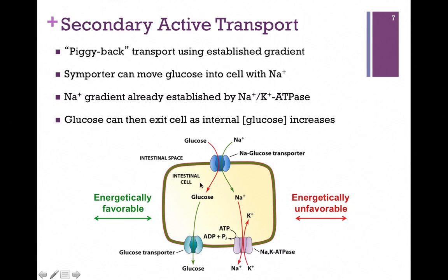Notice that this is a good example of a symporter — sodium is transported with glucose, and both are coming inside the cell. In either a symporter or an antiporter, one ion or molecule is moving with the gradient (in this case sodium) and the other is moving against the gradient (in this case glucose). Of course, we do have that glucose transporter, and as glucose concentration builds inside the cell, it will spontaneously move down its concentration gradient.